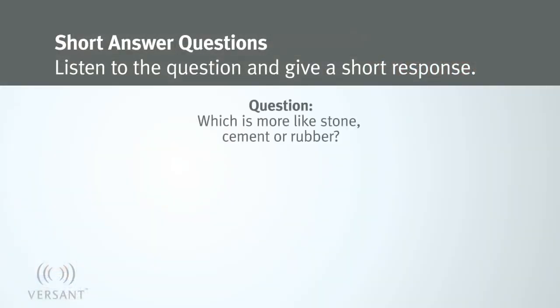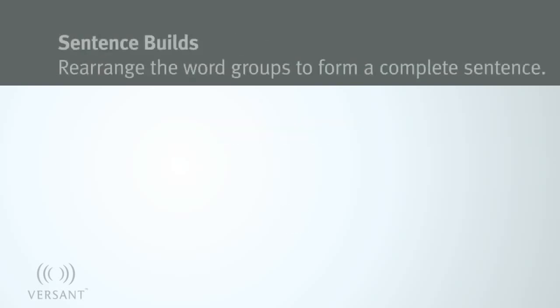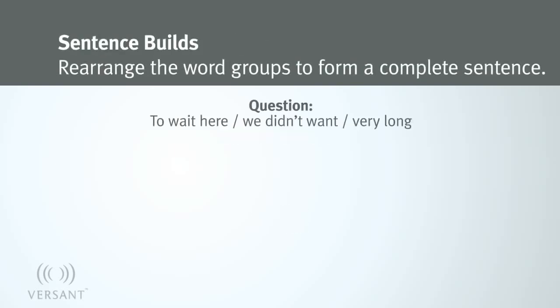Which is more like stone — cement or rubber? Cement. To wait here. We didn't want. We didn't want to wait here very long.